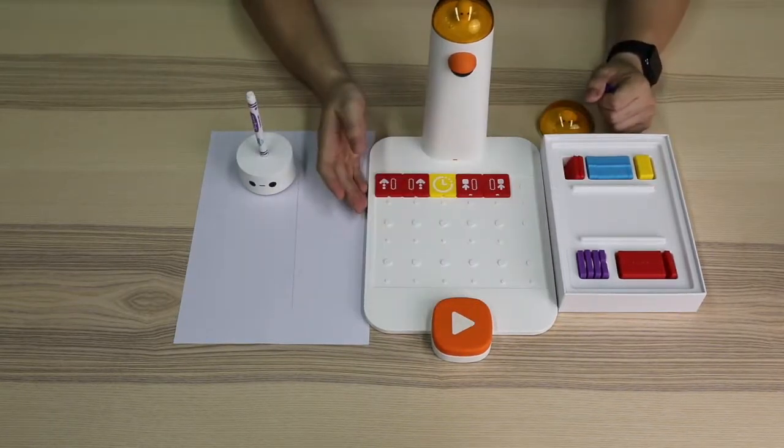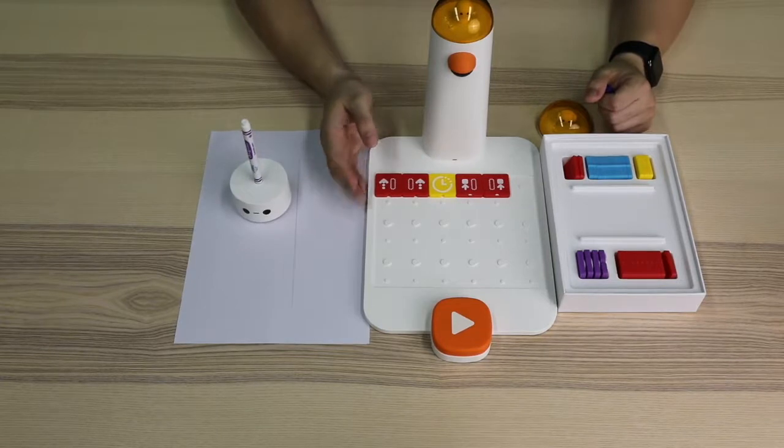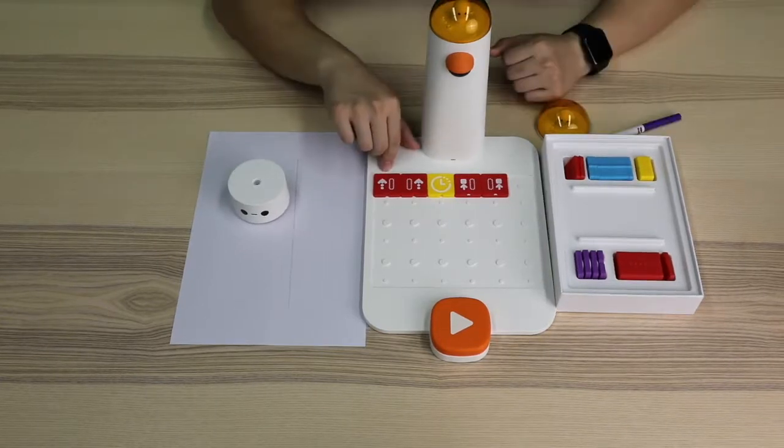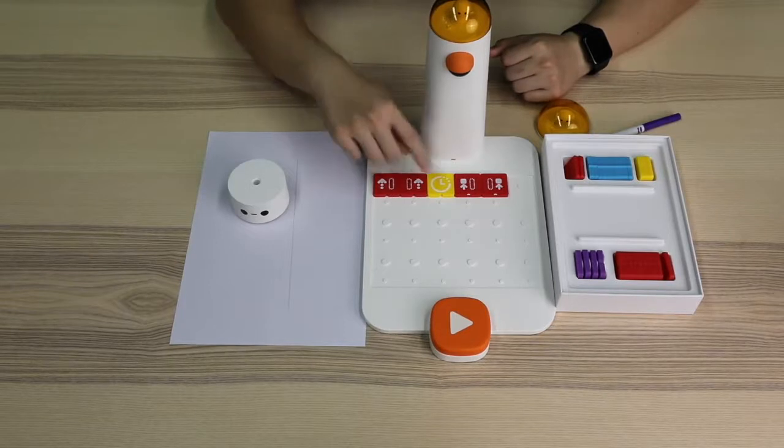As we can see, Matata Bolt maintains its first state, which is go straight, for one second, and then maintains its second state, which is stop.